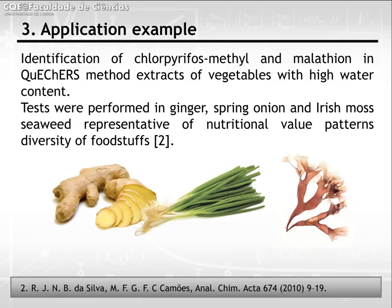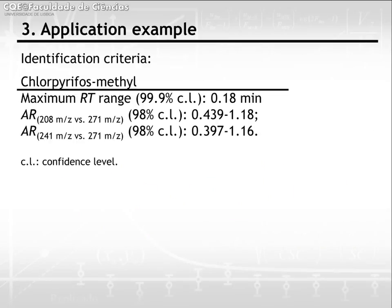The developed examination strategy was applied to the identification of chlorpyrifosmethyl and malathion in QuEChERS method extracts of vegetables with high water content. Tests were performed in ginger, spring onion, and Irish moss seaweed, since these commodities are representative of the nutritional value diversity of the studied foodstuffs. This slide presents identification criteria set for chlorpyrifosmethyl: namely, a maximum retention time range for 99.9% confidence level of 0.18 minutes, defining the maximum absolute difference between chlorpyrifosmethyl and the sample peak retention time, and also the minimum and maximum values of two abundance ratios of three characteristic chlorpyrifosmethyl fragments, with abundance ratio intervals set for 98% confidence level.